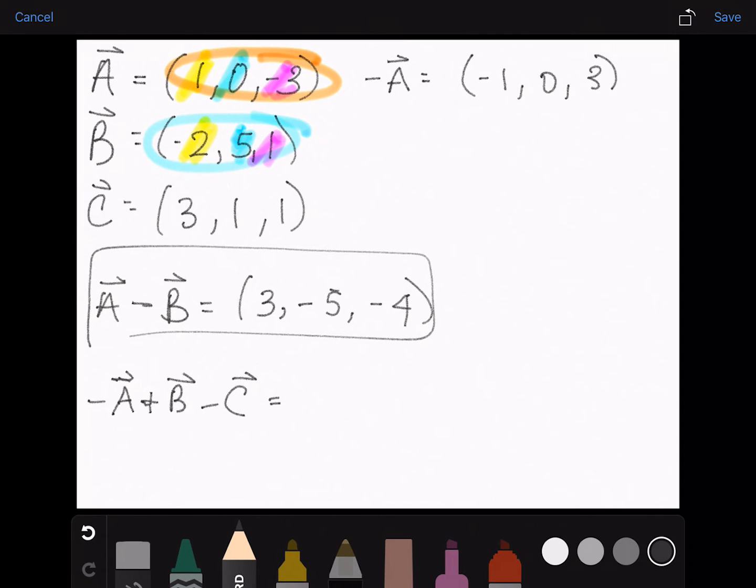And then we have to add and subtract in the order that it's listed, so we need to start with negative A. So our first point will be negative 1 plus negative 2 minus 3, and we'll get negative 6. And then for the second number, 0 plus 5 minus 1 is 4, and 3 plus 1 minus 1 is 3.